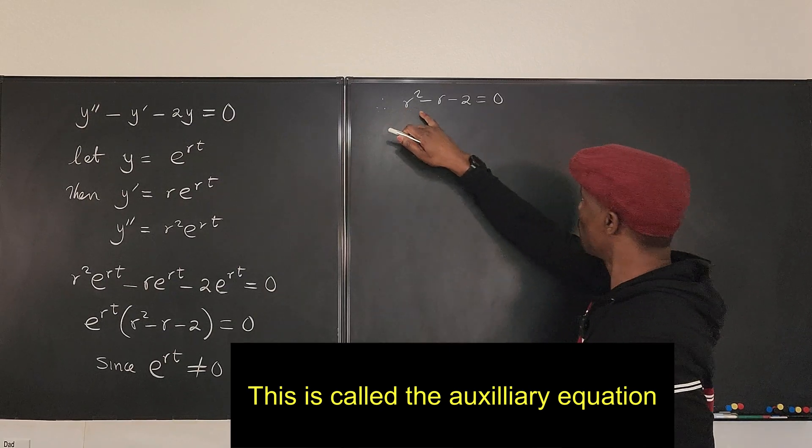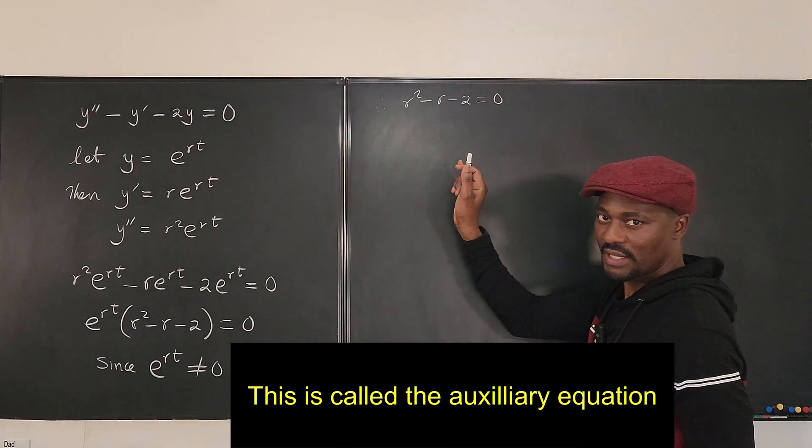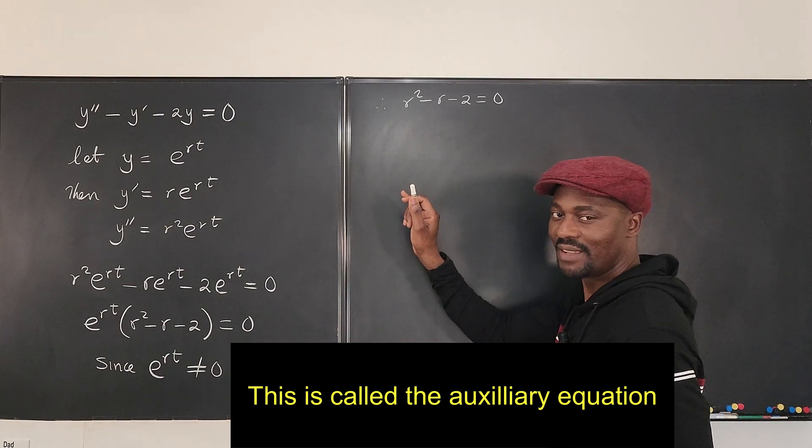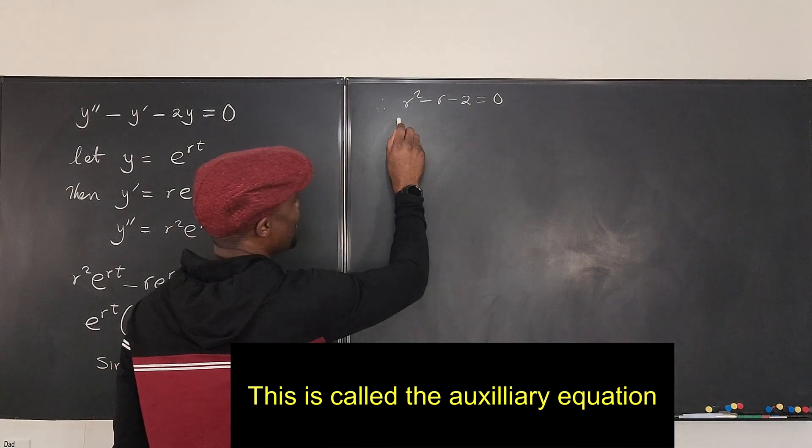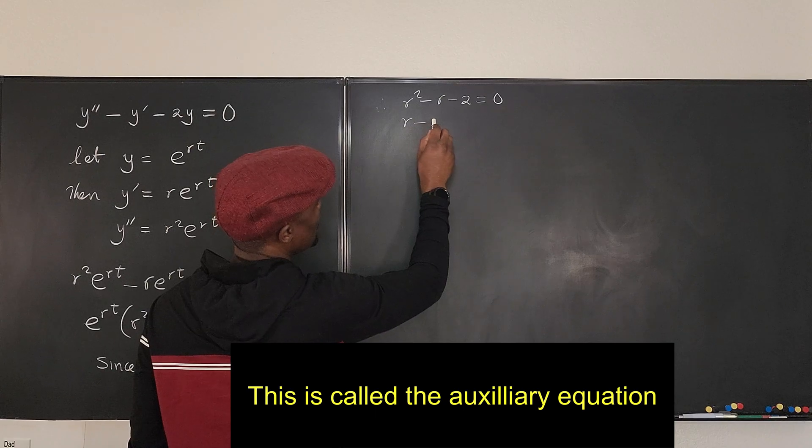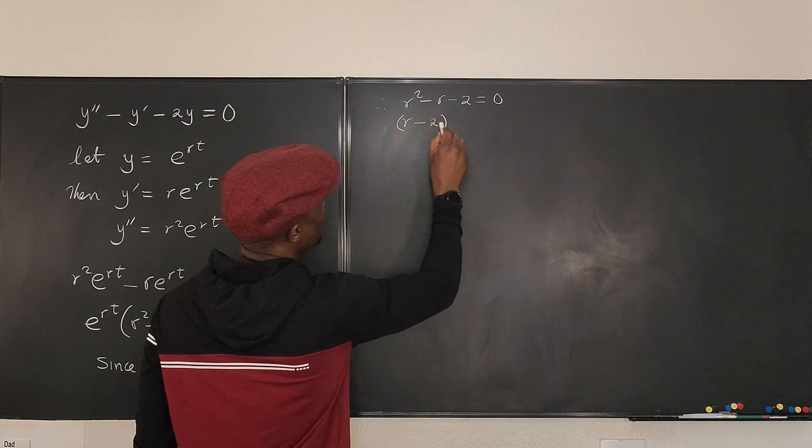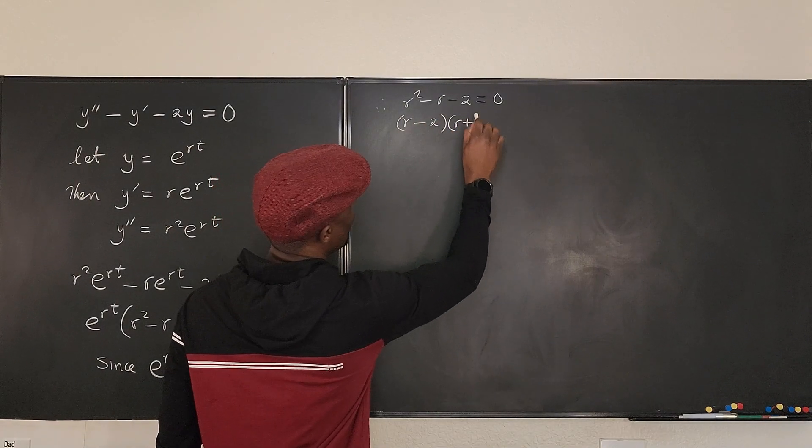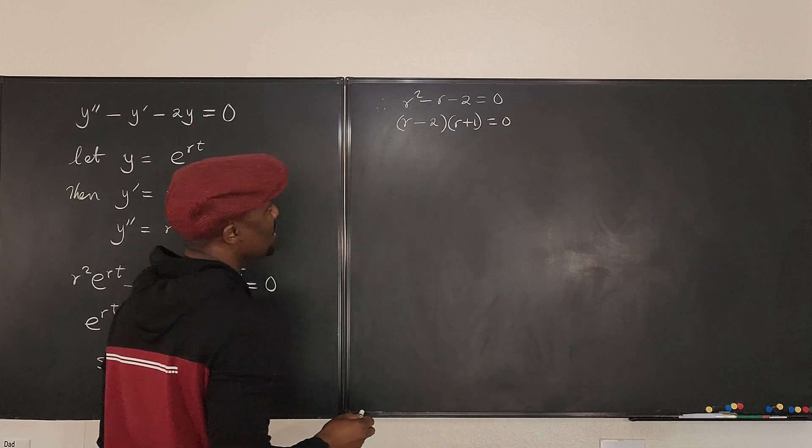So we can say therefore r² - r - 2 = 0. So if this is what we've got, we can solve this quadratic equation by factoring. So if I factor this, it's going to be (r - 2)(r + 1) is equal to zero...